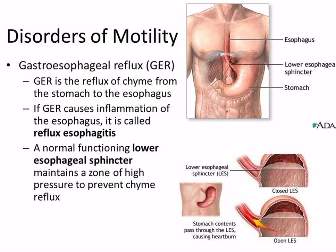Besides GERD, bulimics also get a lot of stomach acid coming up. They get erosion at the esophagus and also erosion of the teeth from all that stomach acid. GERD is also more common at older age because muscles atrophy and can't contract the way they used to, so food and acid come back up.